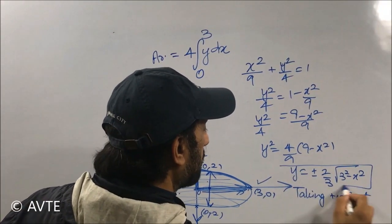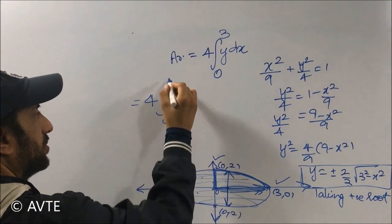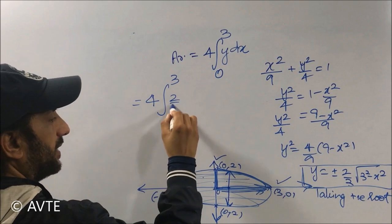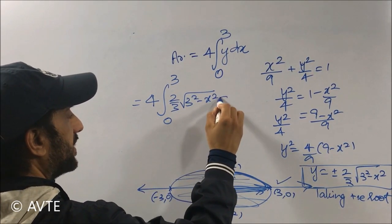And we'll be taking the positive root. So it will be 4 times 0 to 3, the integration of 2 by 3 into under root of 3 square minus x square dx.